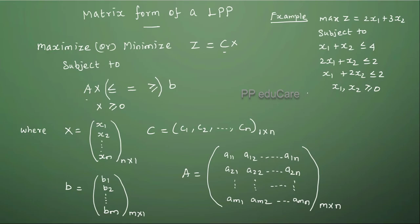We have to convert this linear programming problem into matrix form. The matrix form is maximize Z is equal to (2, 3) times (X1, X2) because we have two decision making variables. Subject to the constraints, the coefficient matrix is (1, 1; 2, 1; 1, 2) and the variable matrix is (X1, X2).